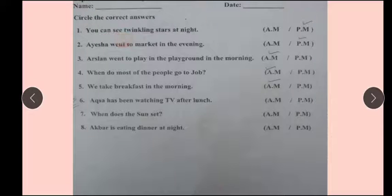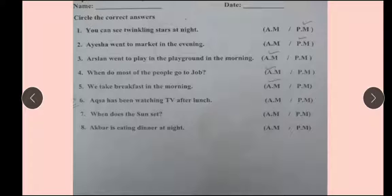According to the statements, we have to circle AM or PM. For example: 'You can see twinkling stars at night.' You can see twinkling stars at night — so when will you use AM or PM? You have to circle PM. You have to write neatly and maintain your own notebook.